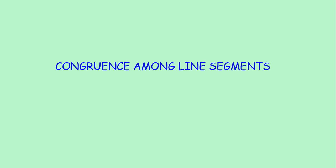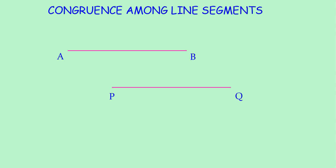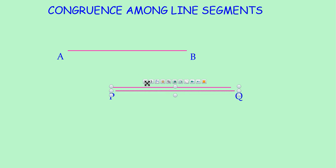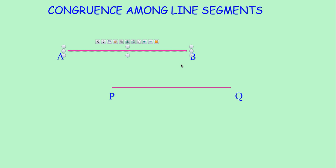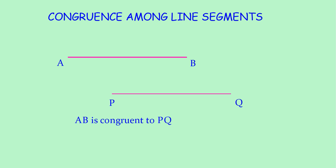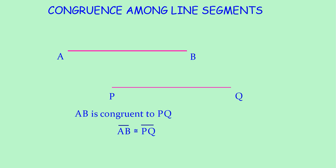Now let us check congruence among line segments. Is AB congruent to PQ? For that, we have to use the method of superposition. Take a trace copy of PQ and keep it on AB. Here PQ covers exactly on AB — keep P on A and Q on B, it covers exactly. So we can say AB is congruent to PQ. This we can write as line segment AB is congruent to line segment PQ.